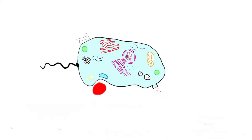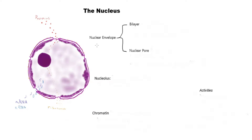Now let's actually study the first organelle thoroughly: the nucleus. Here I've drawn a nucleus — it should be attached to the rough endoplasmic reticulum, but since we're only studying the nucleus I've left that out. As you can see, the nucleus has two bilayers, which is very important. These two bilayers aren't always continuous with each other; they're separated by nuclear pores, which allow things to come in and out. We have proteins coming into the nucleus, and mRNA, tRNA, and ribosomes leaving. There's also a dense part called the nucleolus, and throughout the nucleus we have chromatin — both dark and light.